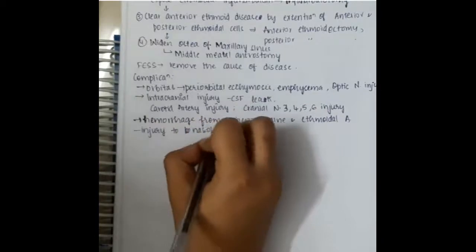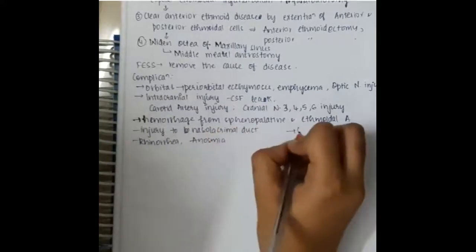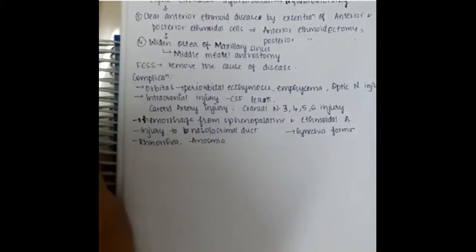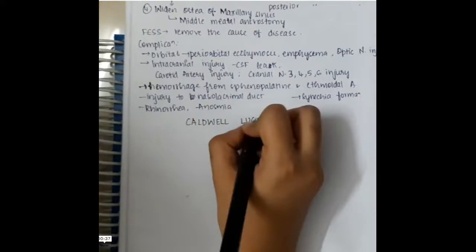It can cause injury to the nasolacrimal duct, rhinorrhea, anosmia, and synechiae formation. All these are the complications of functional endoscopic sinus surgery. Thank you guys for watching my lecture.